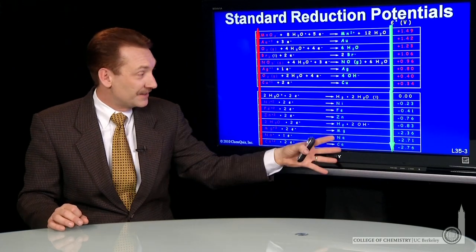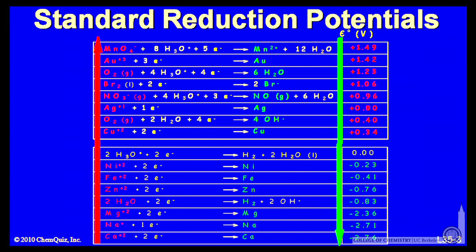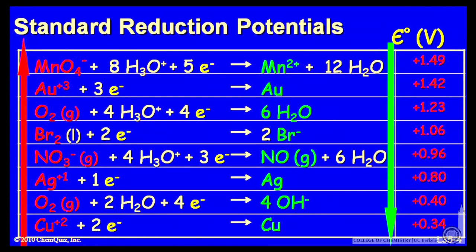Here's an extensive table. Let's look at just the top half, those with reduction potential greater than the standard hydrogen electrode. So here, those are expanded.